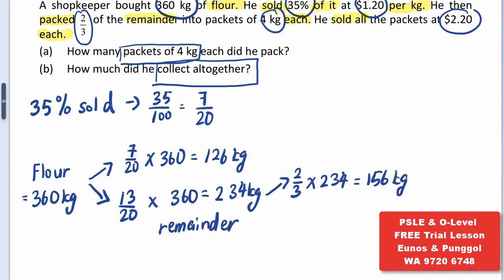So, if he packed two-thirds of the remainder, he will have one-third of the remainder left. Now we can answer Part A: How many packets of 4 kilograms each did he pack? He packed 156 divided by 4, which gives us 39 packets.